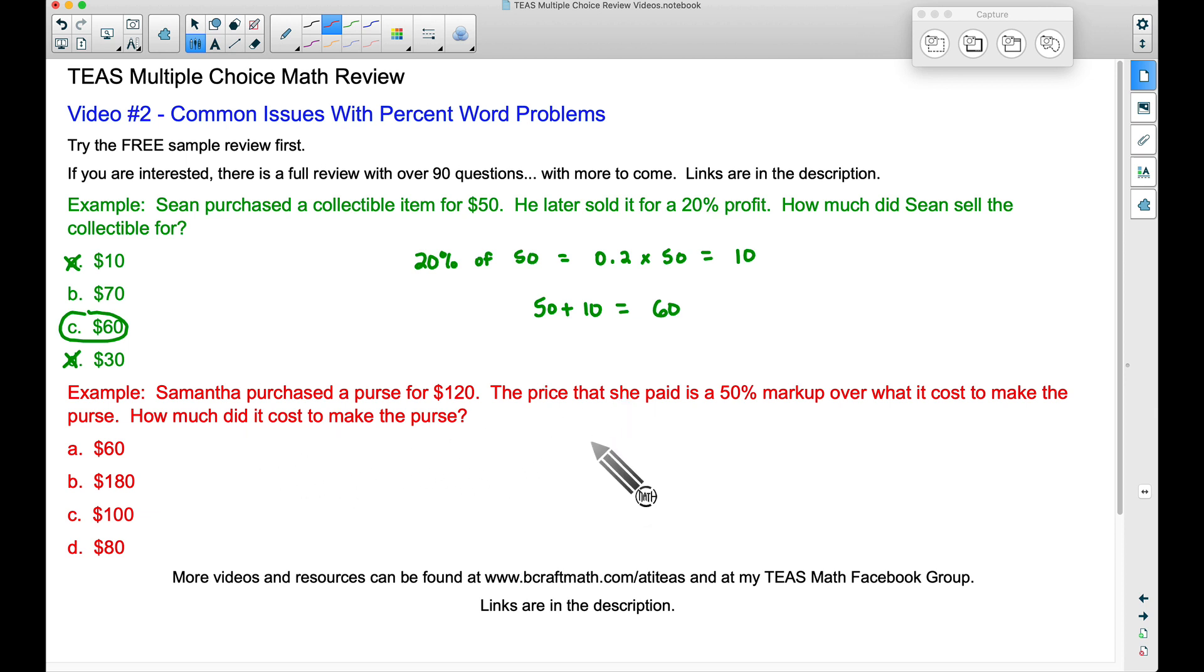This is not what you want to do. You do not want to find 50% of 120. You do not want to multiply 50%, that's written as a decimal, of 120 and you're saying oh well that's 60.